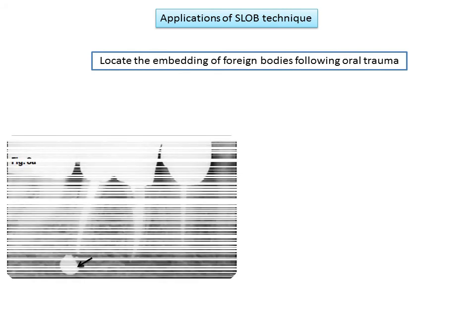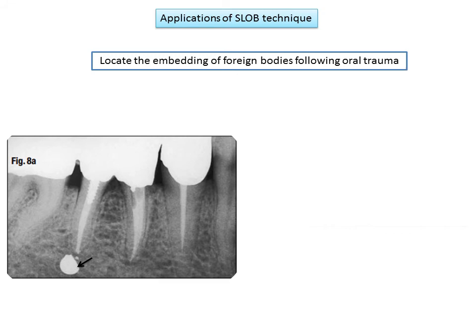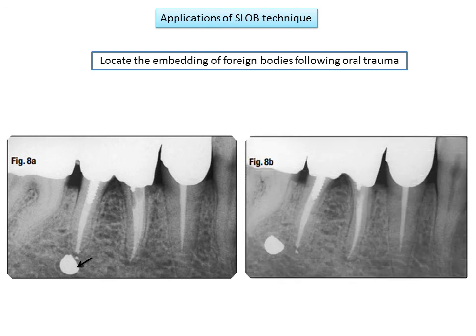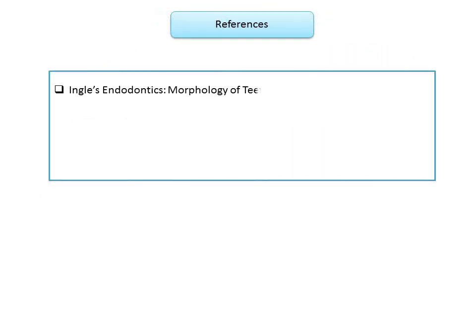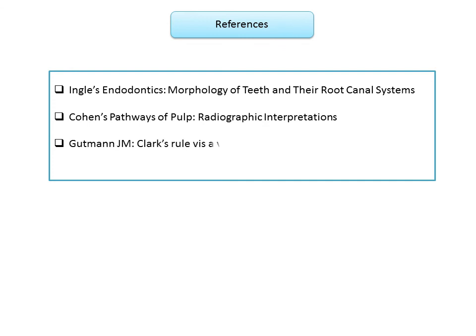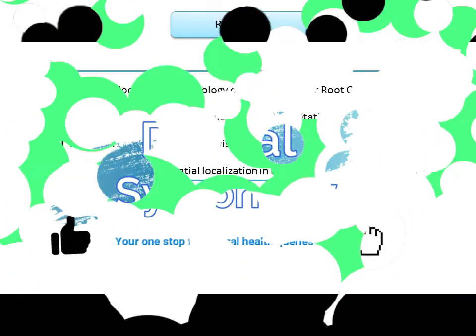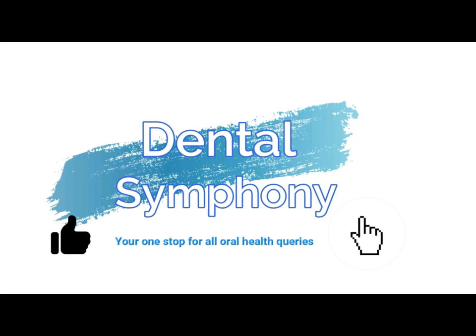The technique also helps locate foreign bodies following oral trauma. A patient struck by shot shows a round radiographic image at the level of the apex of the distal root. A second radiograph in mesiodistal angulation confirms the shot is not in contact with the apex but is more buccal. These are practical applications of the buccal object rule, which must be applied whenever the spatial location of buccal versus lingual or palatal structures must be determined.